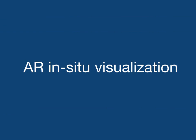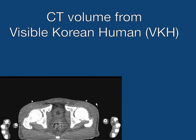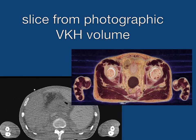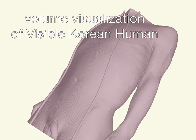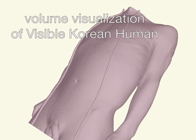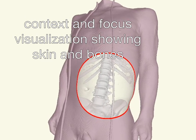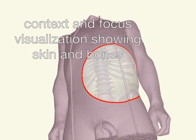To get this visualization we use a very special dataset: the Visible Human dataset. This dataset consists of a CT volume and photographic slices. The CT volume is visualized using a ray caster from medical datasets. We use a visualization method called focus and context visualization, which shows internal structures while at the same time showing the skin.